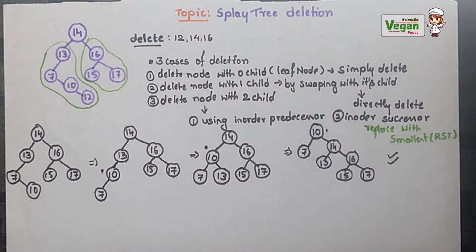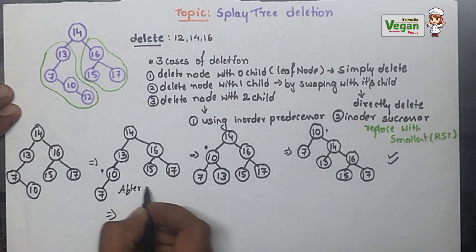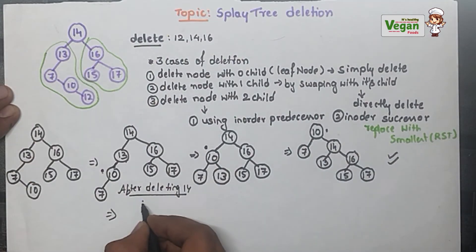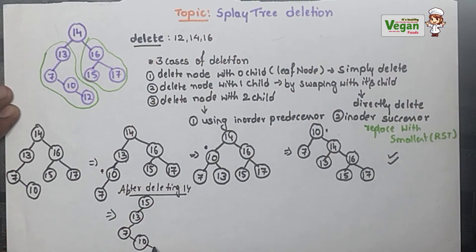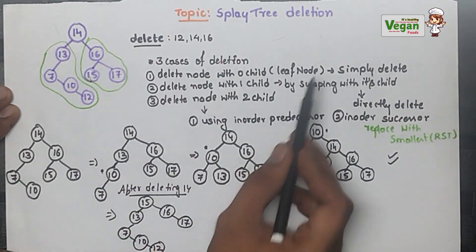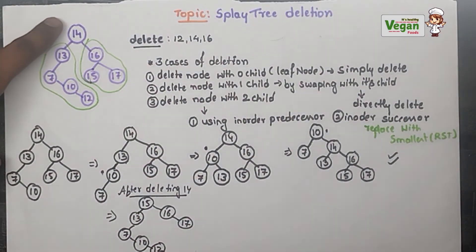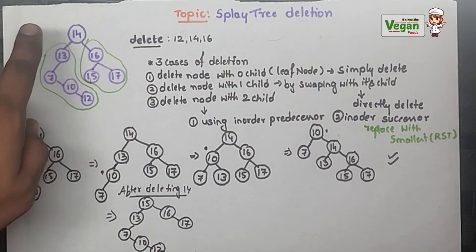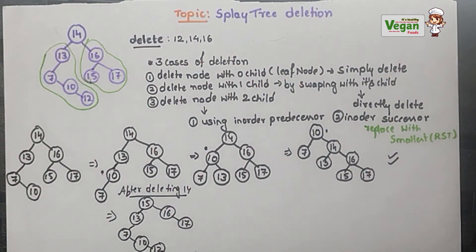After deleting 14, my tree will be: 15 in place of 14, then 13, 7, 10, 12 on the left, and 16, 17 on the right. 14 and 15 were swapped so 14 came to 15's position as a leaf node and was directly deleted. Since 14 was the root node, it has no parent node, so no splaying operation is performed. If there was any parent node I must make it the root node, but since 14 had no parent, there is no need.